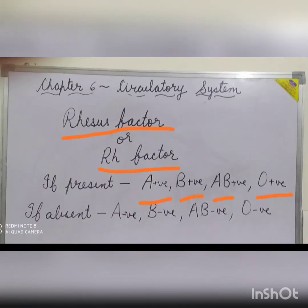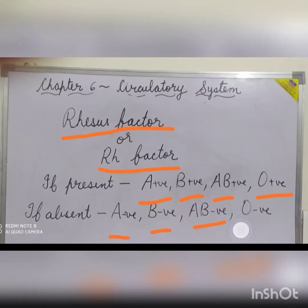If the RH factor is absent, the blood groups may be A negative, B negative, AB negative and O negative.